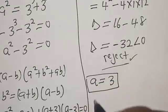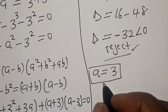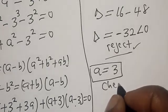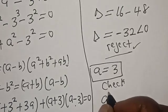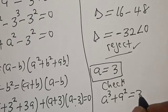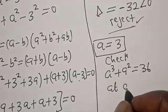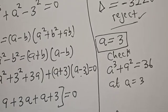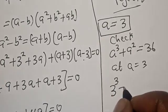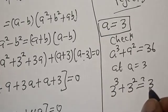The only real solution we have is A is equal to 3. That is our final answer. We can verify: substituting A equals 3 into the equation, 3 raised to power 3 plus 3 squared must equal 36, and indeed 27 plus 9 equals 36. Confirmed.